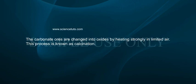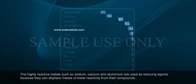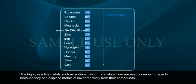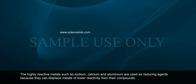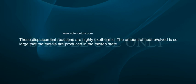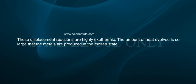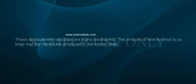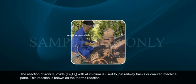Highly reactive metals such as sodium, calcium, and aluminium are used as reducing agents because they can displace metals of low reactivity from their compounds. These displacement reactions are highly exothermic — the amount of heat evolved is so large that the metals are produced in the molten state. The reaction of iron trioxide (Fe₂O₃) with aluminium is used to join railway tracks or cracked machine parts. This reaction is known as the thermite reaction.